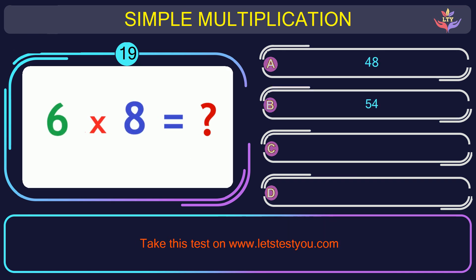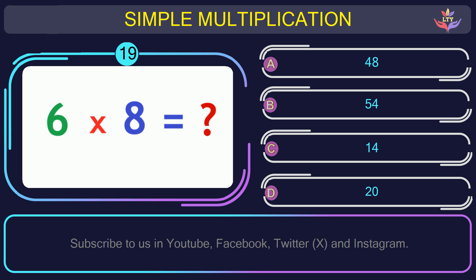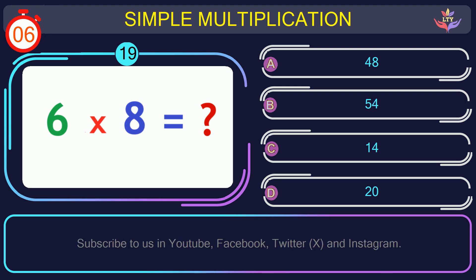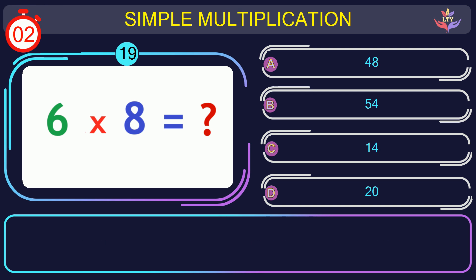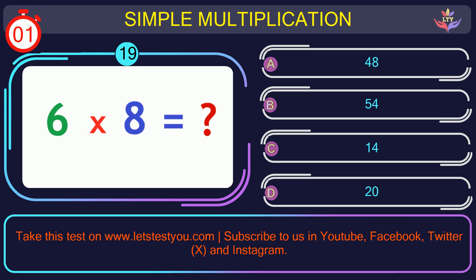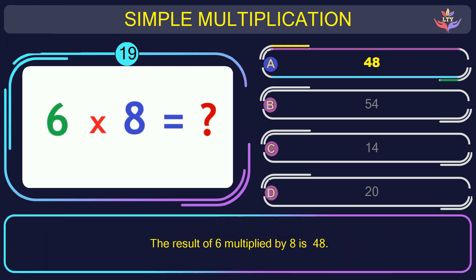Question number 19: if you multiply 6 by 8, what is the result? The correct answer is option A: 48. The result of 6 multiplied by 8 is 48.